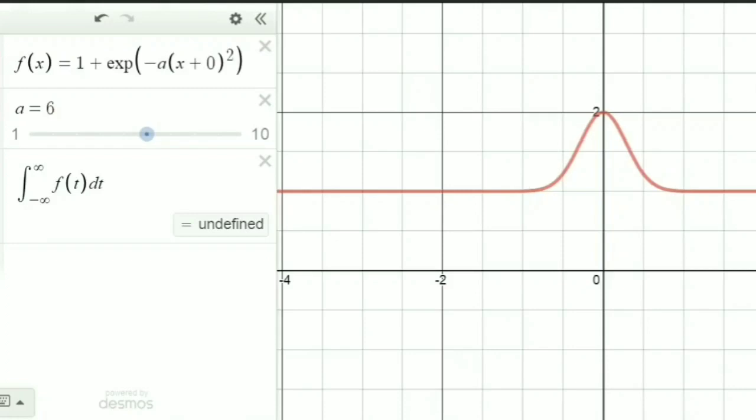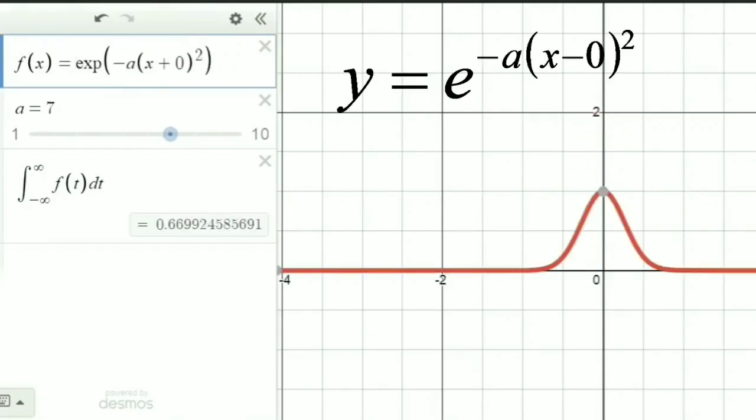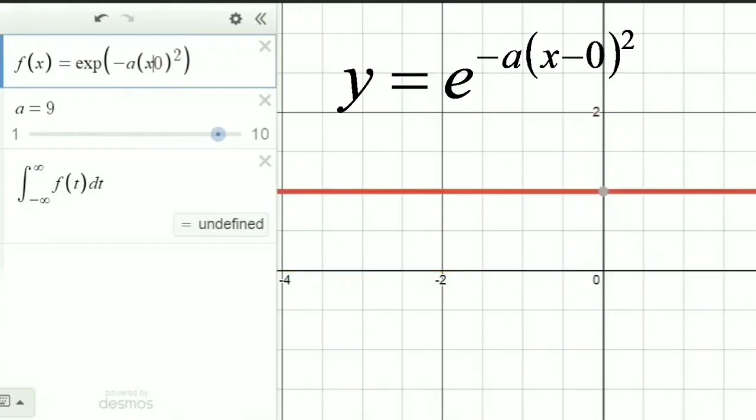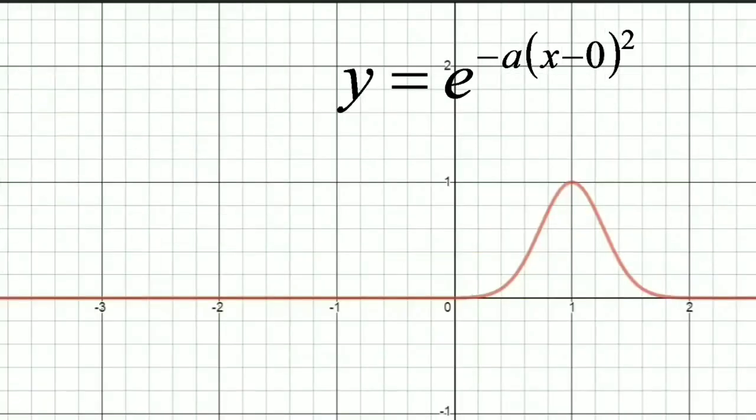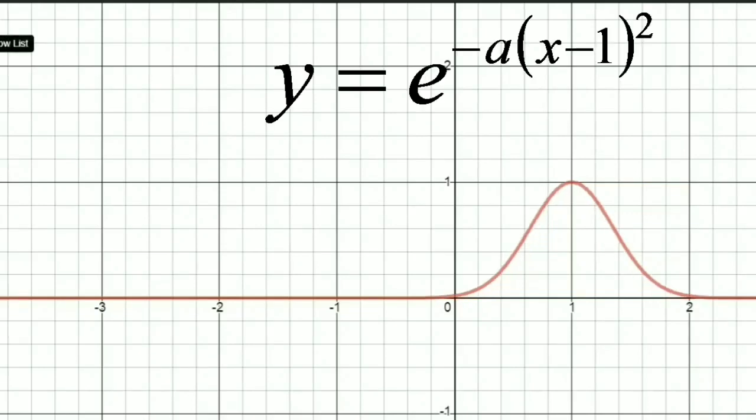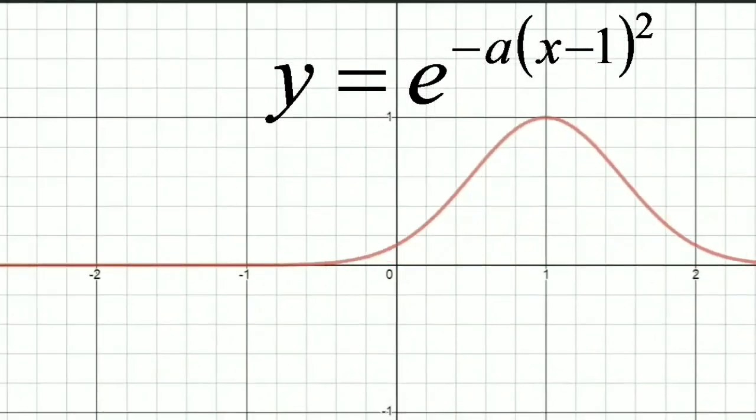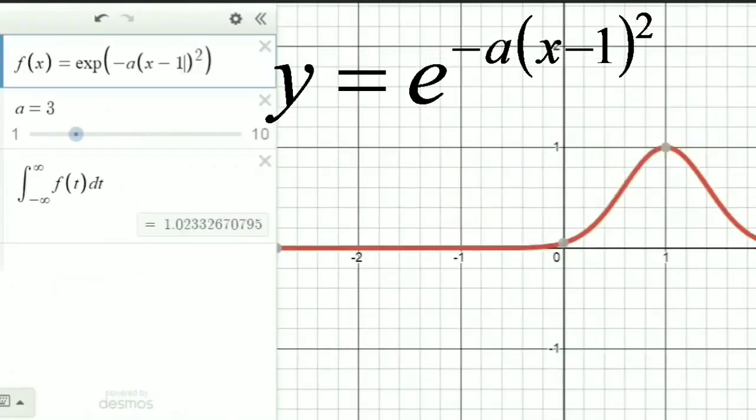e raised to minus ax square is a Gaussian curve, whose center is at x equal to 0. Now, if I wish to change the center from x equal to 0 to x equal to 1, what I have to do is replace the x in the Gaussian expression with x minus 1. So we will get a Gaussian curve which will be centered at x equal to positive 1.